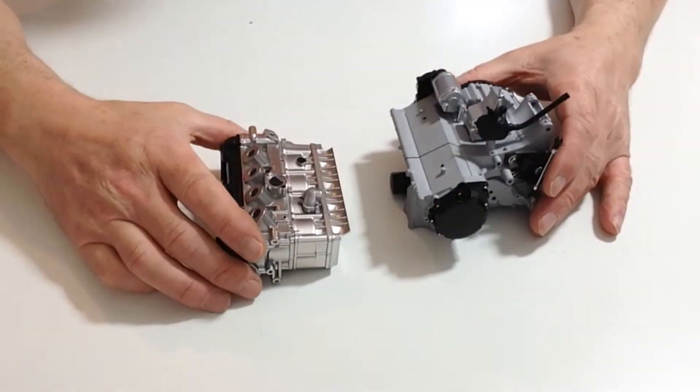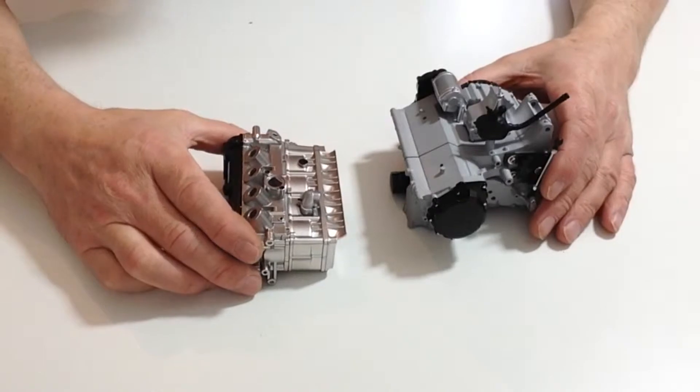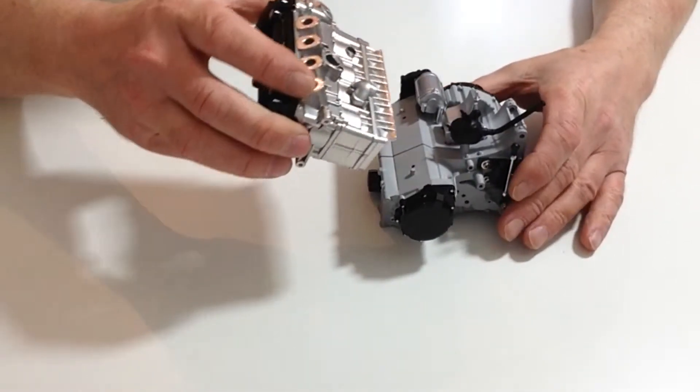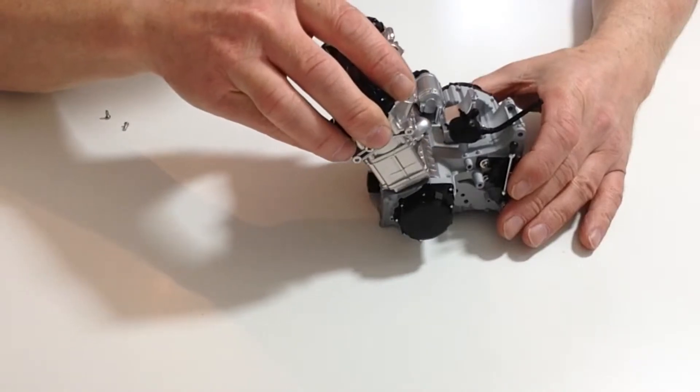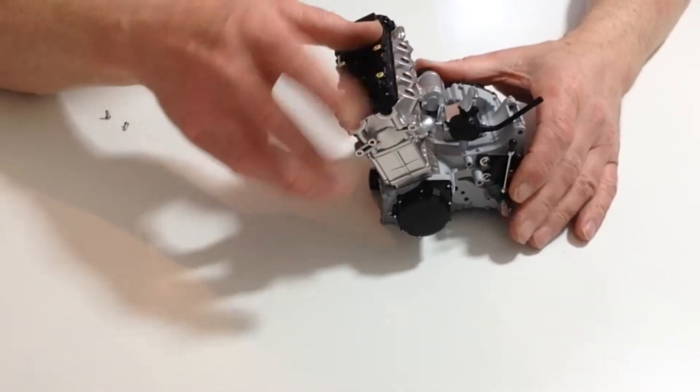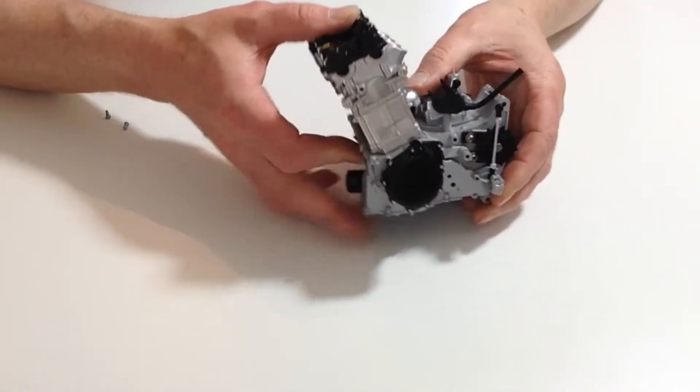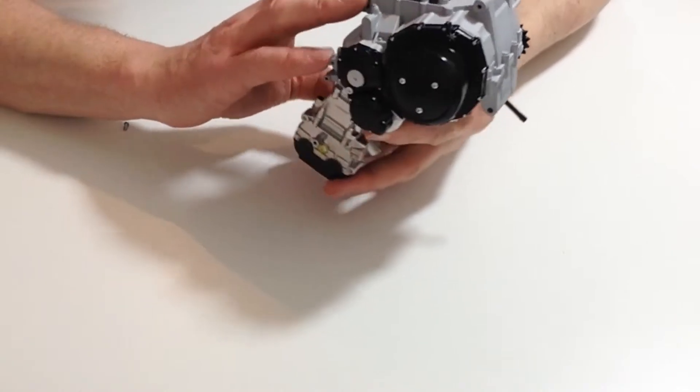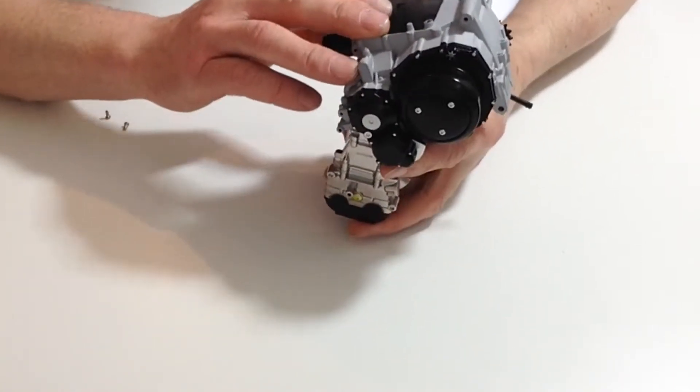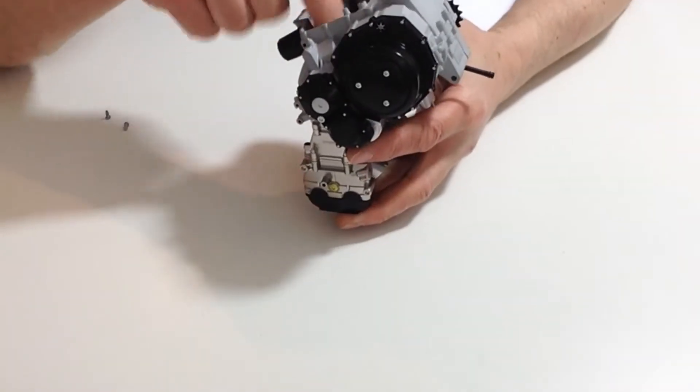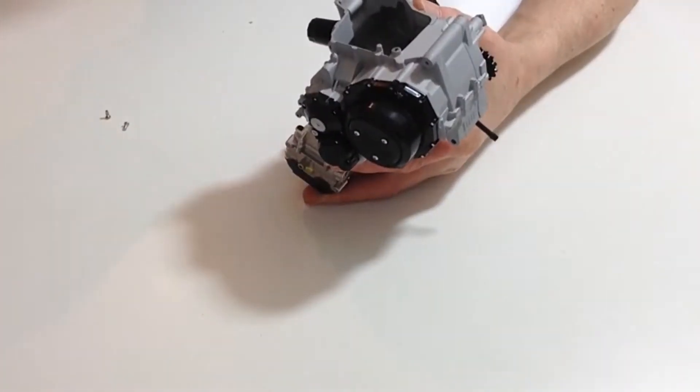Now take the cylinder block and the crankcase, noticing the orientation, and place the cylinder block onto the crankcase like so. Once you have done that, turn the assembly over and place two 2.3 by 8mm silver screws through the bottom of the holes that we have just tapped.